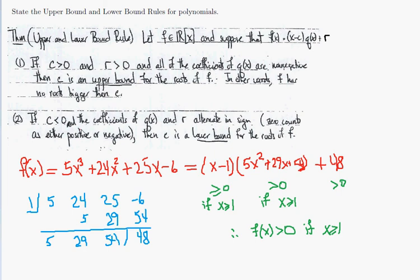The rule for negative numbers is similar, except the bottom row alternates in sign, and 0 counts as either positive or negative for alternating sign purposes. That is the upper and lower bound rules, and the part at the bottom is the rationale for why the first rule is correct.